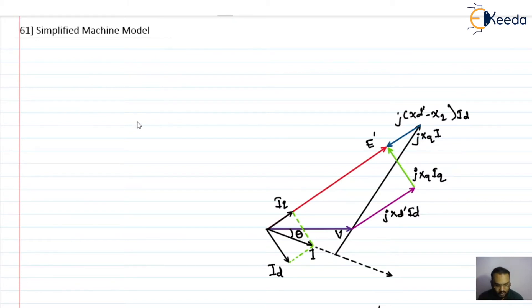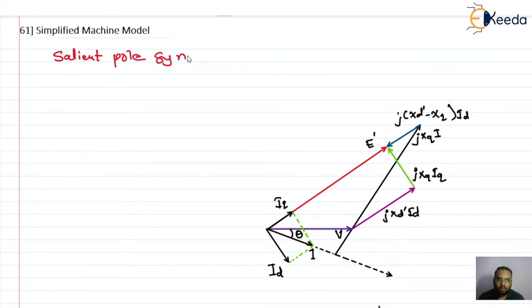To obtain the simplified machine model, we are going to consider a salient pole machine — specifically a salient pole synchronous machine. We already know the operation of the salient pole alternator or the salient pole synchronous machine.